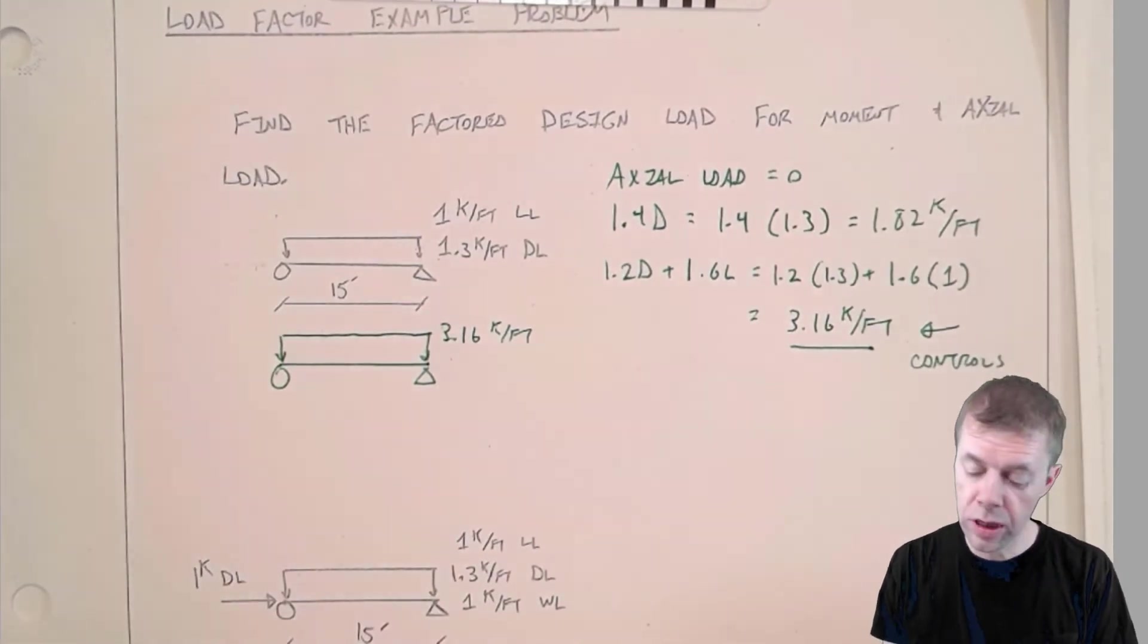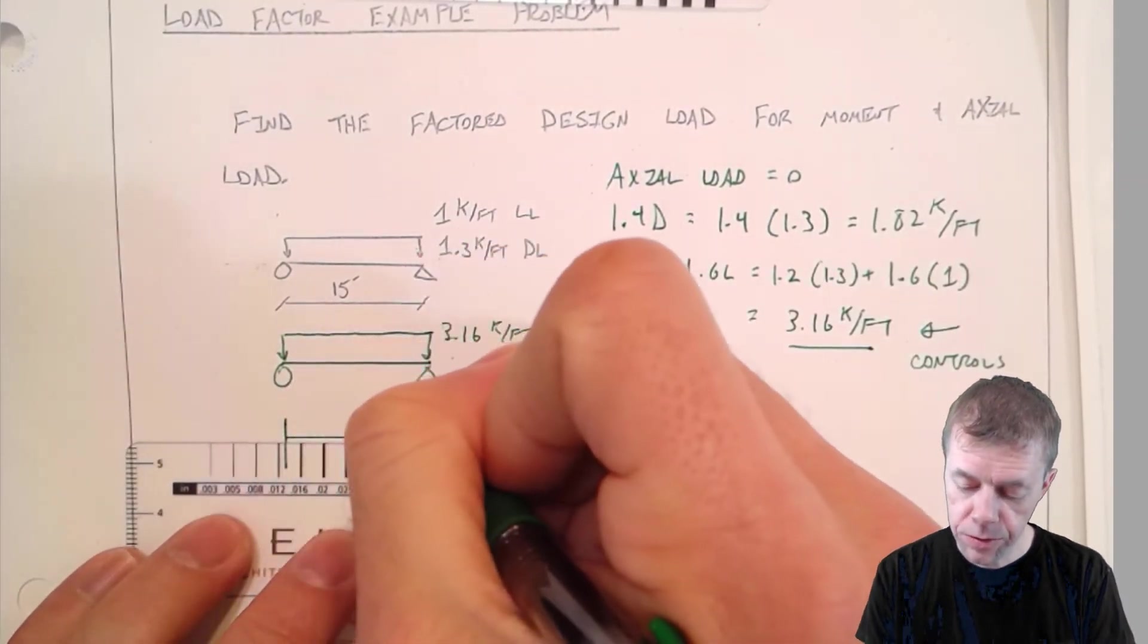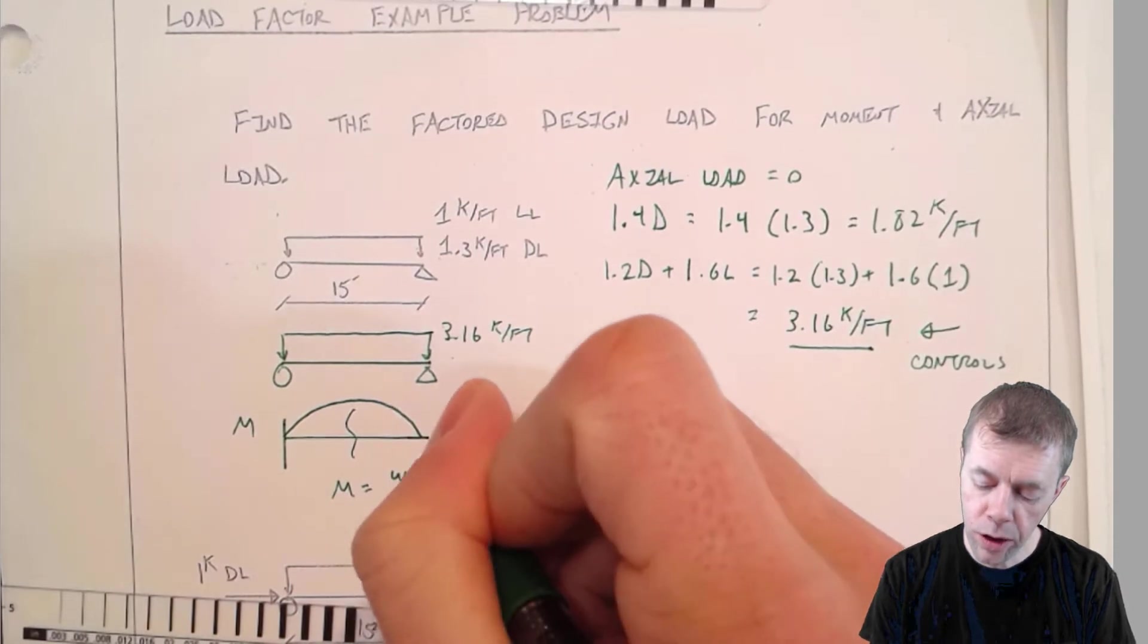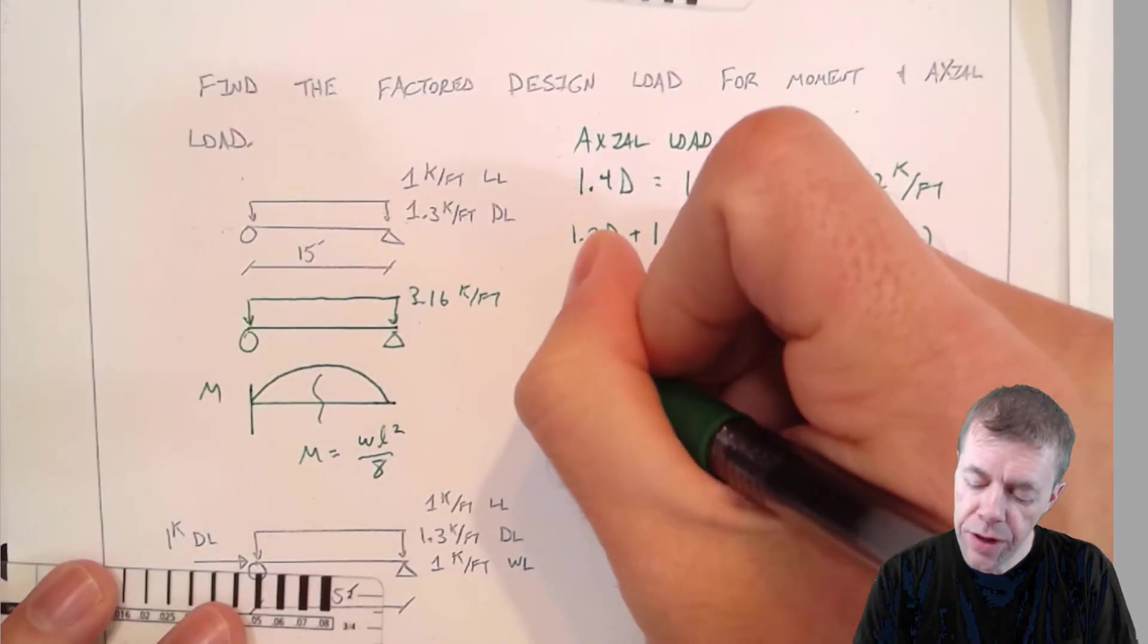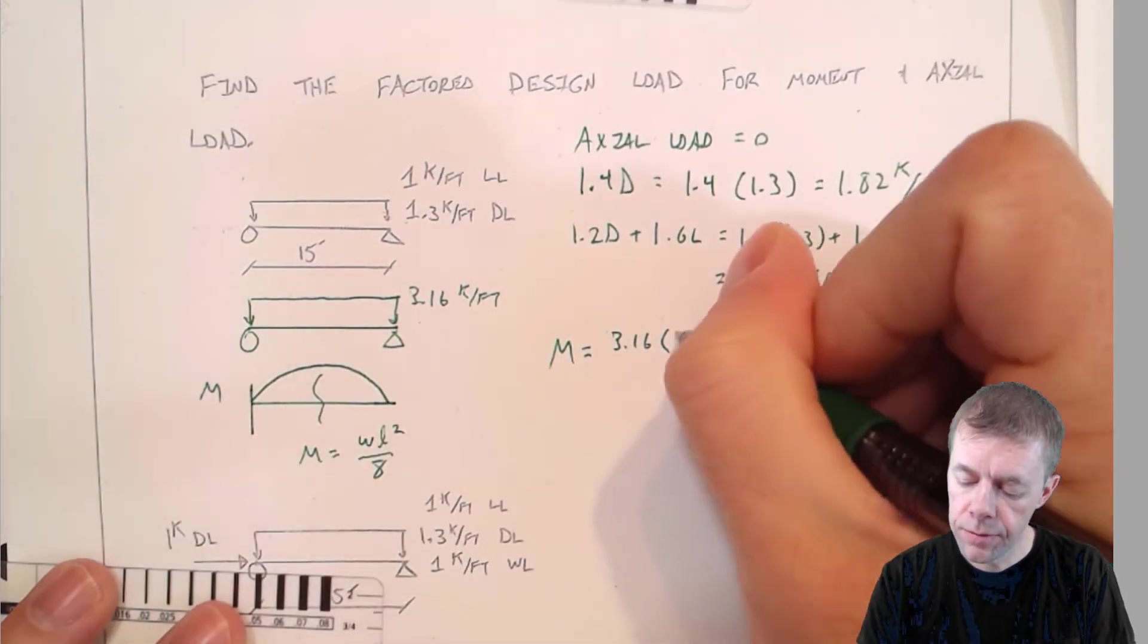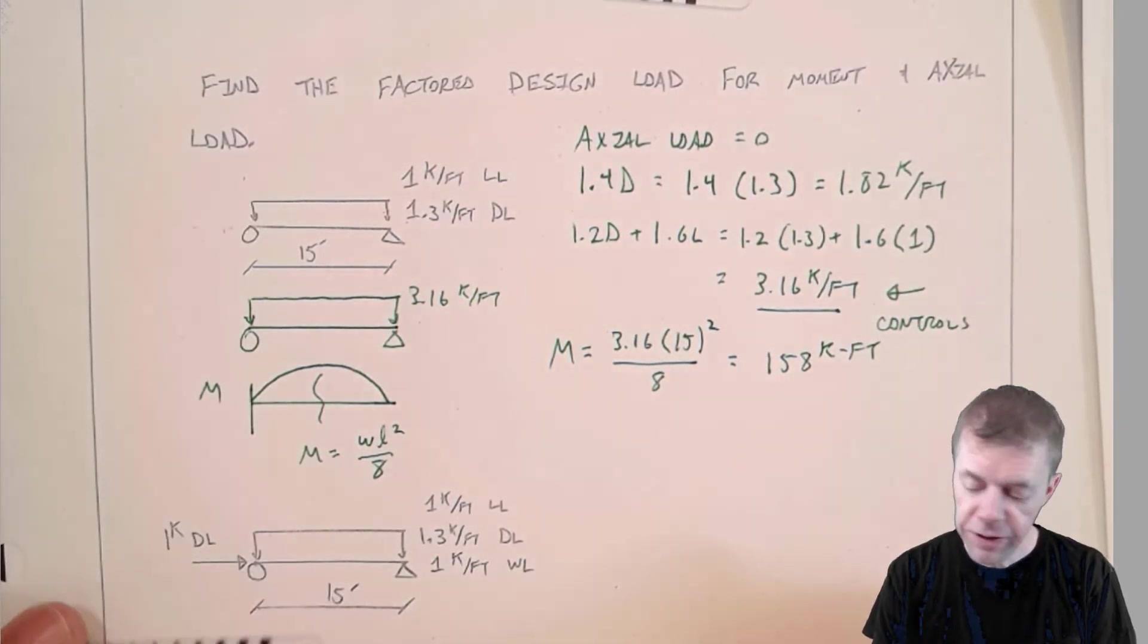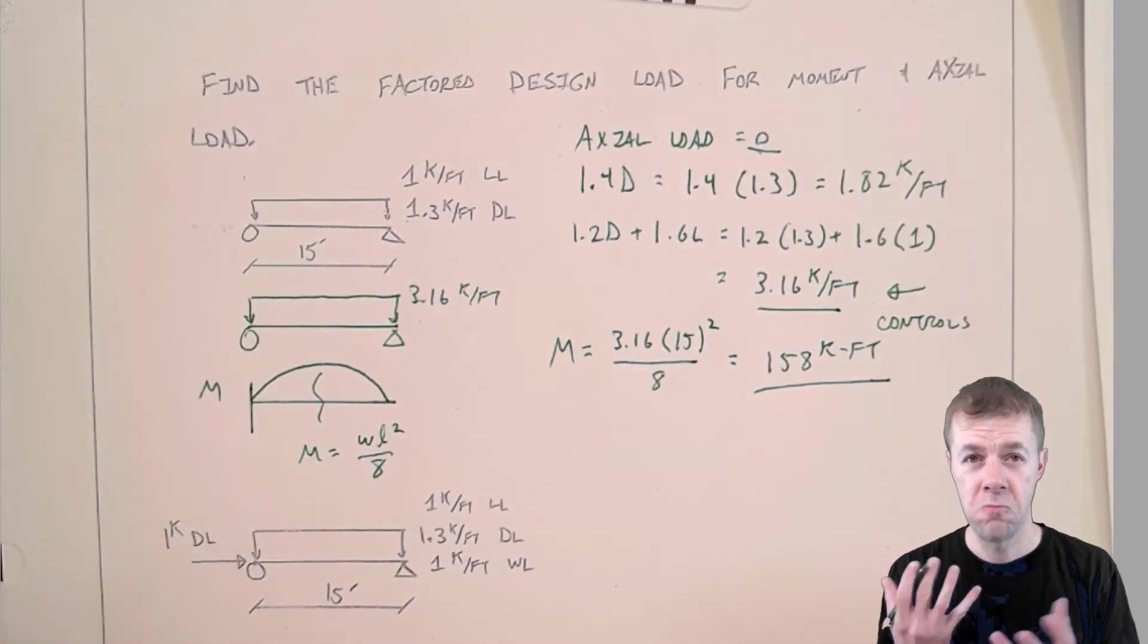Now we're going to solve for the maximum moment. I know from a simply supported beam with a uniform load on it from structural analysis that the moment diagram is going to look like this. And I know that maximum point on the moment diagram is going to be WL squared over 8. The moment is now equal to 3.16 times the length of the beam which is 15 feet, squared, all over 8. That's equal to 158 kip feet. So that's what we have to design for. One problem down.